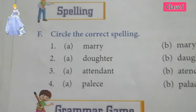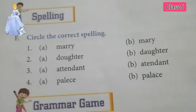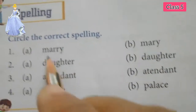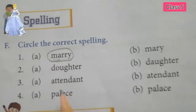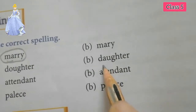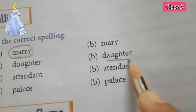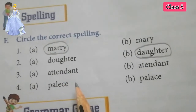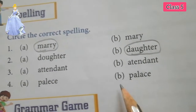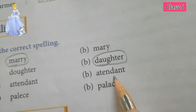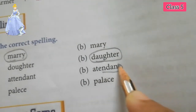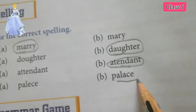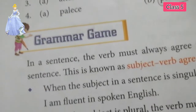Circle the correct spelling. Marry: M-A-R-R-Y — circle it. Daughter: D-A-U-G-H-T-E-R — option B, circle it. Attendant: A-T-T-E-N-D-A-N-T — option B, circle it. Palace: P-A-L-A-C-E — option B.